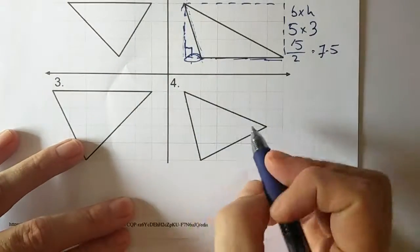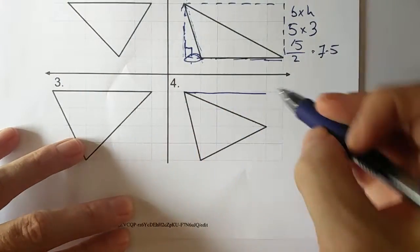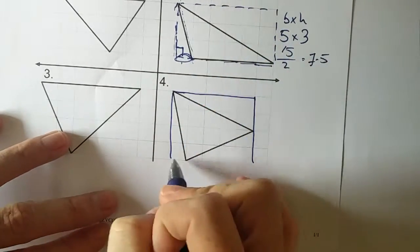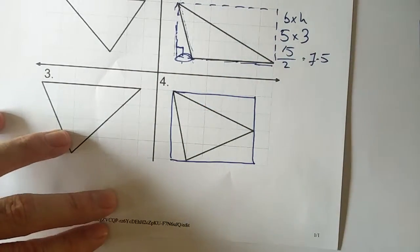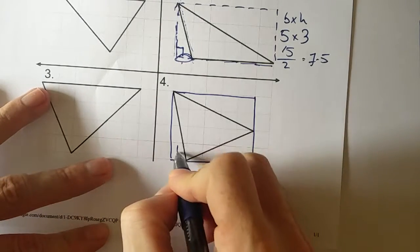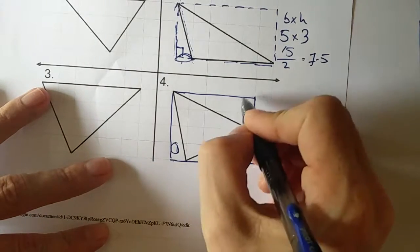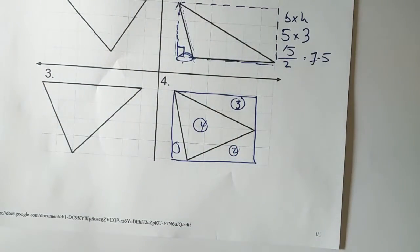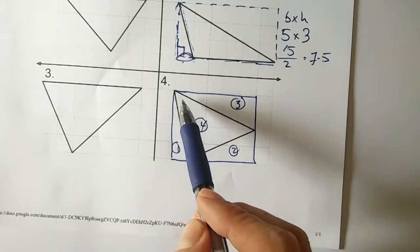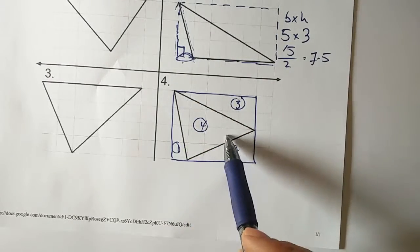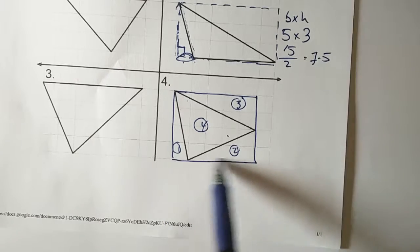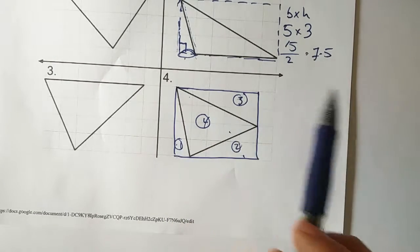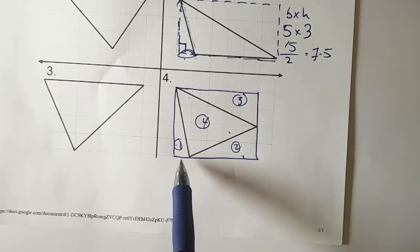Just like with my other three triangles, what I can do is draw a large rectangle around it. Within this large rectangle, we can see we actually have not one, not two, not three, but four triangles inside. In order to find the area of this one triangle, I can find the area of the entire rectangle and then take away the area of triangles one, two, and three.